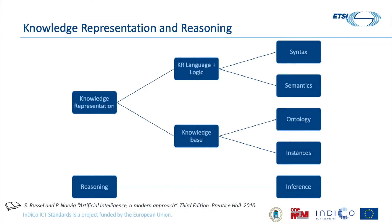Then we have what is called a knowledge base that is composed by the ontology — the data model — that is usually combined with some instances that are defined according to this ontology. When we talk about knowledge representation, we also talk about reasoning. Thanks to these semantics and this underlying logic, we are able to get inferences over our data, inferences that are not explicit in the data, with the benefit that these inferences are shared between different actors.